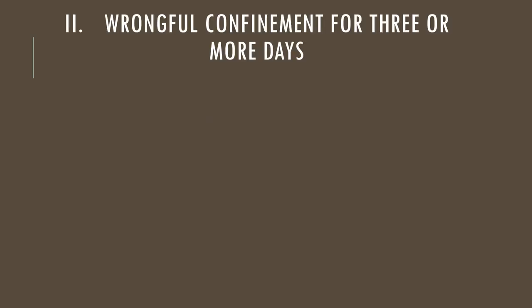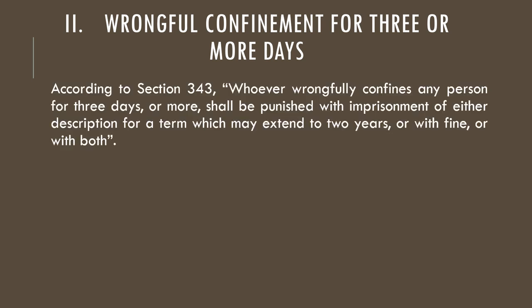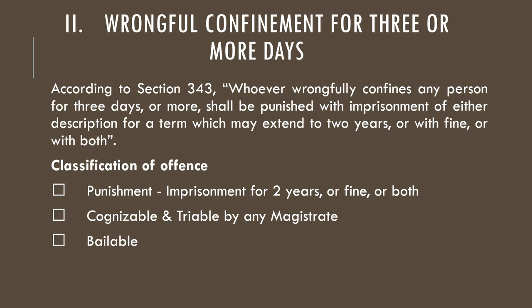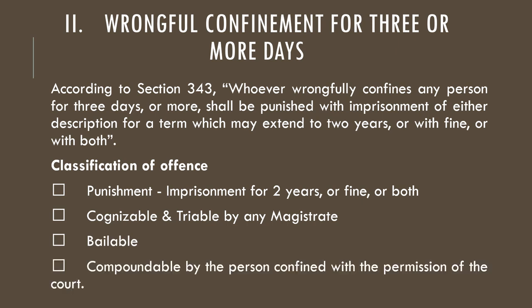The second category of wrongful confinement is wrongful confinement for three or more days. According to Section 343, whoever wrongfully confines any person for three days or more shall be punished with imprisonment of either description for a term which may extend to two years, or with fine, or with both. The classifications are: imprisonment for two years, fine or both; cognizable and triable by any magistrate; bailable; and compoundable by the person confined with the permission of the court.